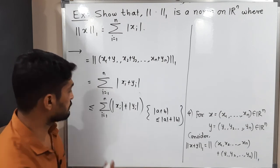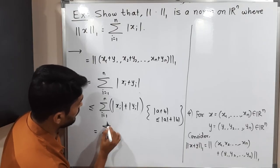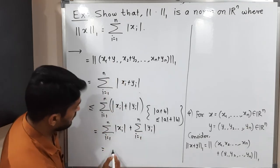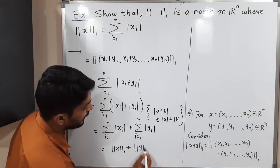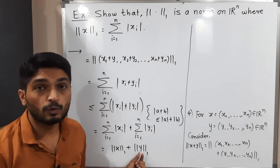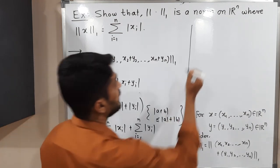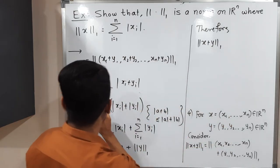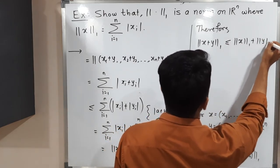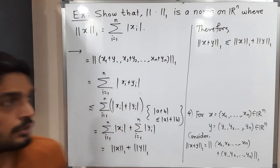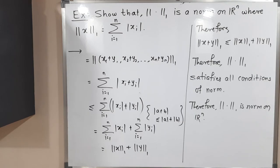Splitting the summation: ∑(|xᵢ| + |yᵢ|) = ∑|xᵢ| + ∑|yᵢ| = norm₁(x) + norm₁(y). Therefore norm₁(x + y) ≤ norm₁(x) + norm₁(y), proving the triangle inequality. Since norm 1 satisfies all four conditions, we can declare it is a norm on ℝⁿ.